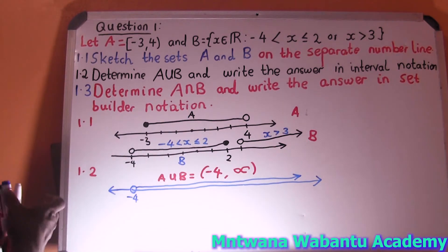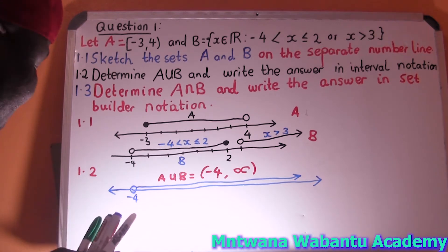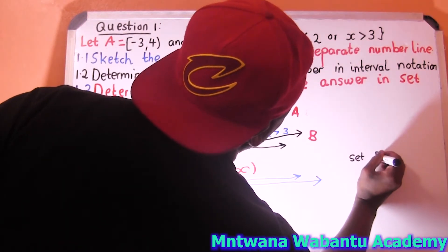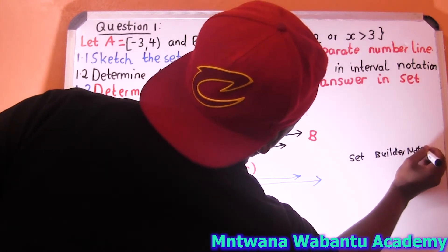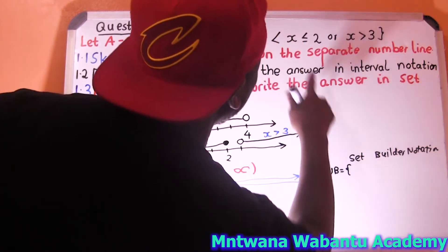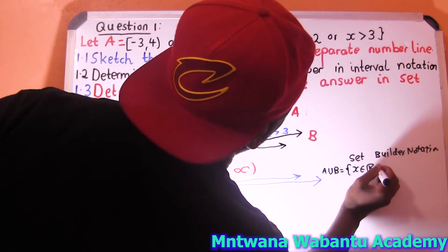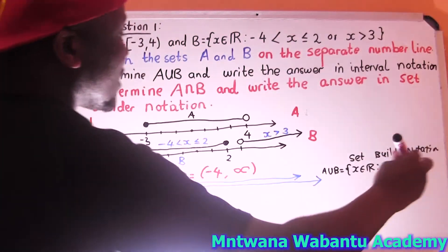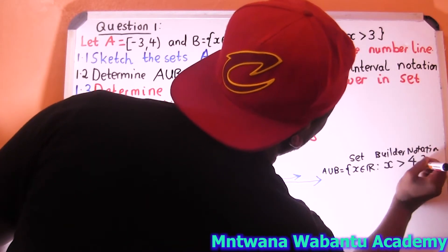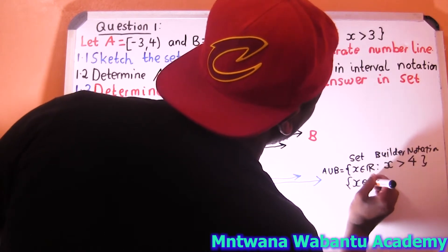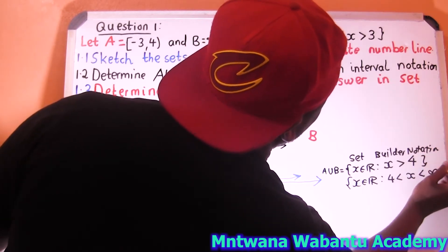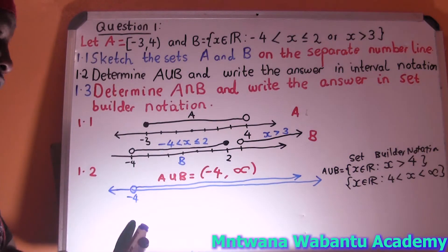If they ask for set builder notation instead, the answer is the same but written differently. Set builder notation: A union B equals the set of x such that x is an element of the real numbers, and x is greater than negative 4 all the way to positive infinity. Either form works if they ask for set builder notation.